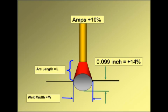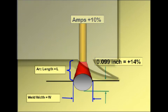In summary, we were able to use the spreadsheet and make quick calculations. We found a 10% increase in travel speed only decreased penetration 3.6%, while a 10% increase in current increased penetration 14%.